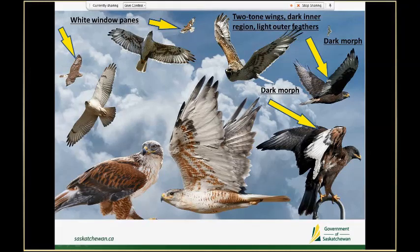Sometimes you do see dark morphs in the study area. Dark morphs still have a similar looking face to Ferruginous hawks with a big gape, but distinctively they have light two-toned wings — light secondaries and primaries with a dark inner region that contrasts very nicely. Here is another example of light outer parts and then dark inner parts.